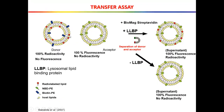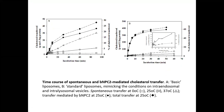This is what the liposome looks like. The donor has 100% radioactivity and no fluorescence — it doesn't have NBD-PE. The receptor has no radioactivity at all but has fluorescence. When you mix these two together, add your biomarker beads, and separate, you have the donor in the pellet and the receptor in the supernatant. You can separate the two, and see that fluorescence is in one and the cholesterol has gone to the other side.